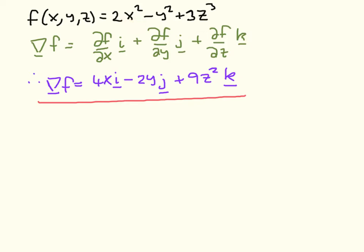Finally, in the Z direction with the K unit vector, we differentiate with respect to Z and get 0 minus 0 plus 9Z squared. That's our final answer for this question. Let's move on to the next question.